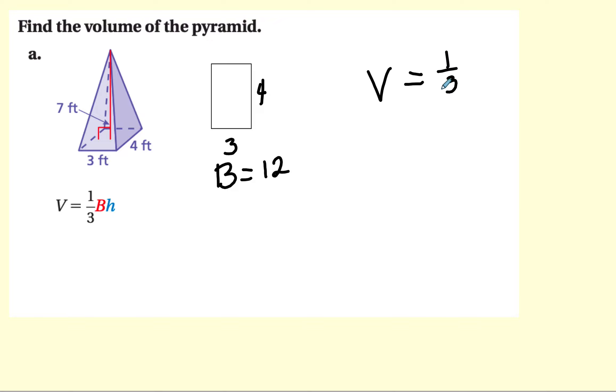Volume is equal to 1 third area of the base times the height. I've taken time to find the area of the base, which is 12. And now I look to my picture to see how tall the pyramid is, 7. Do a little reducing. And this goes into here one time. This goes into here four times. And so the answer is 28. And this is cubic feet.